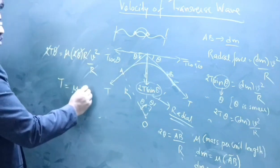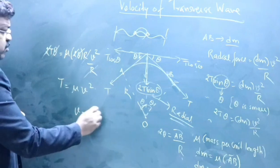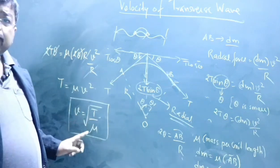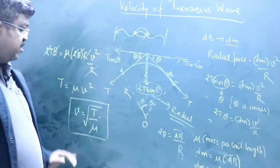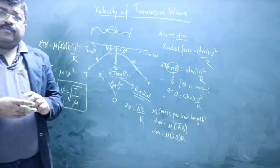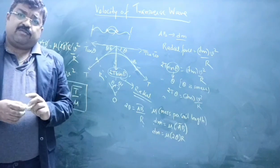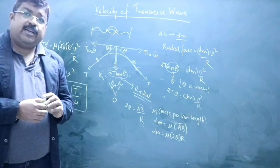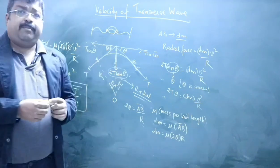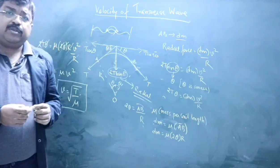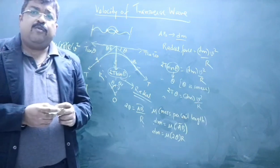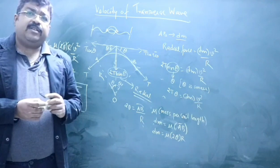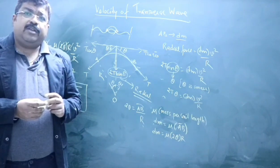Therefore v = √(T/μ), where T is the tension and μ is the mass per unit length. This is the derivation for velocity of transverse wave in a string. More than the derivation itself, the key concept here is how to find tension in a bent or curved string.